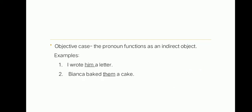Objective case functioning as indirect object: when we say indirect object, it is the recipient of the direct object. For example, I wrote him a letter. Him is the indirect object of the verb wrote, and it is the recipient of a letter, which is the direct object. Him is the objective case version of he. Another example: Bianca baked them a cake. Them is the indirect object of the verb bake, and it is the recipient of cake, which is the direct object. Them is the objective case version of they. Did you understand, class? Do you have a question?